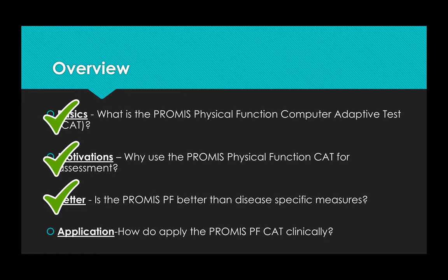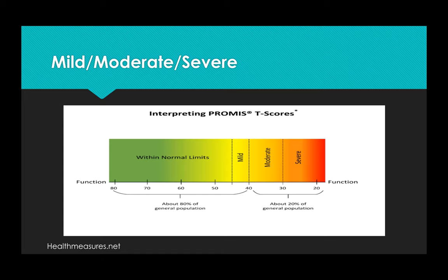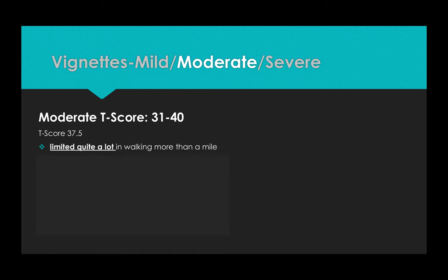So, now let's move to clinical application. Once we start using the physical function measure, we'll need to apply it in patient notes and in our own thinking. A basic interpretation of the measure is mild, moderate, and severe categories. Function above 45 is within normal limits. 40 to 45 is mild decrease in physical function. 30 to 40 can be interpreted as moderate limitations in physical function. And then below 30 as severe limitations in physical ability.